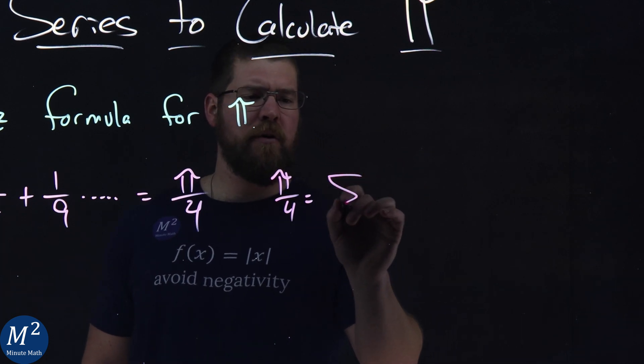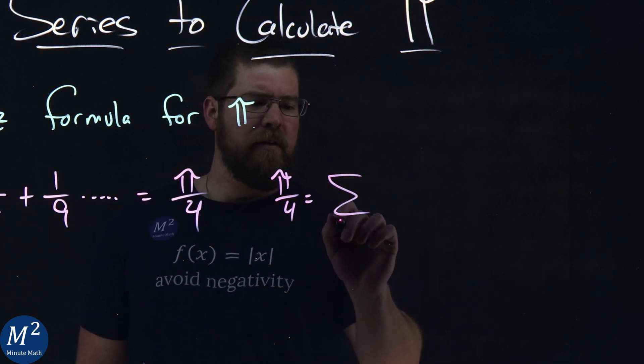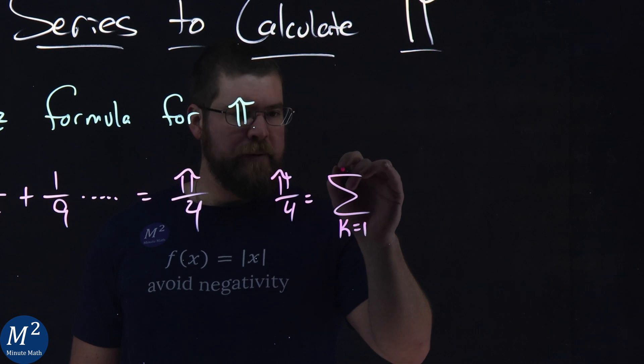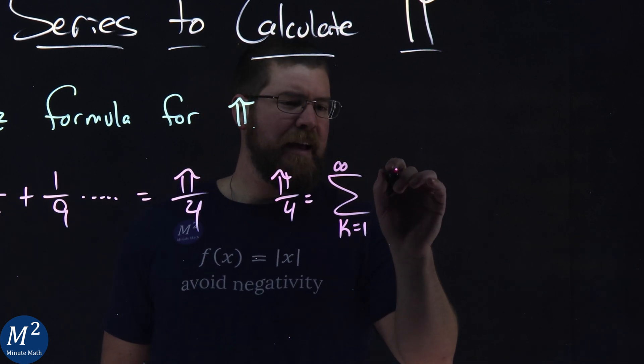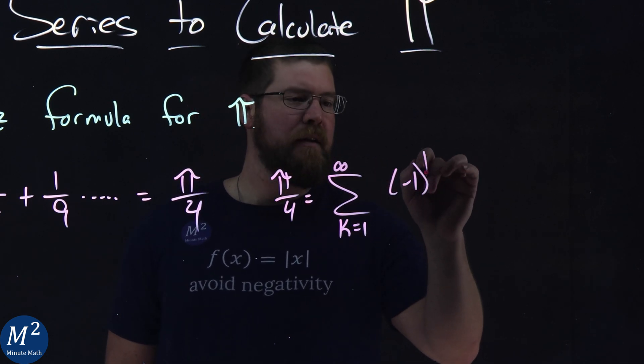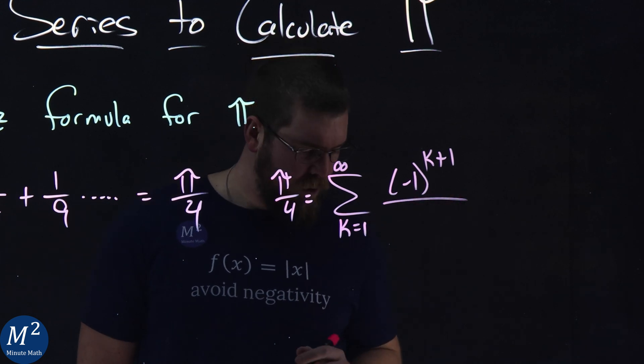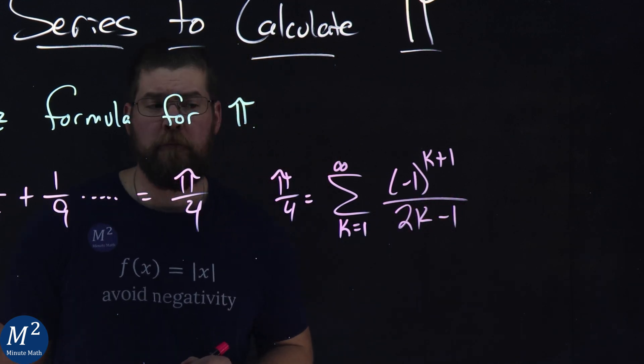And the series is this: pi over 4 is equal to the sum from k equals 1 to infinity of negative 1 to the k plus 1 power over 2k minus 1.